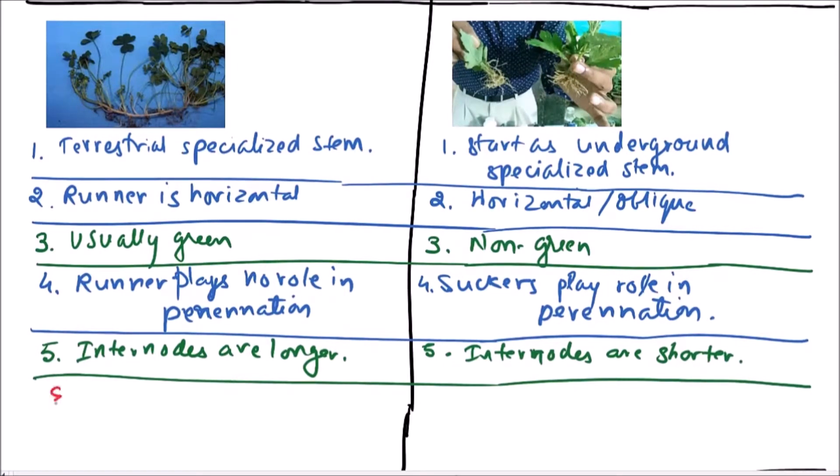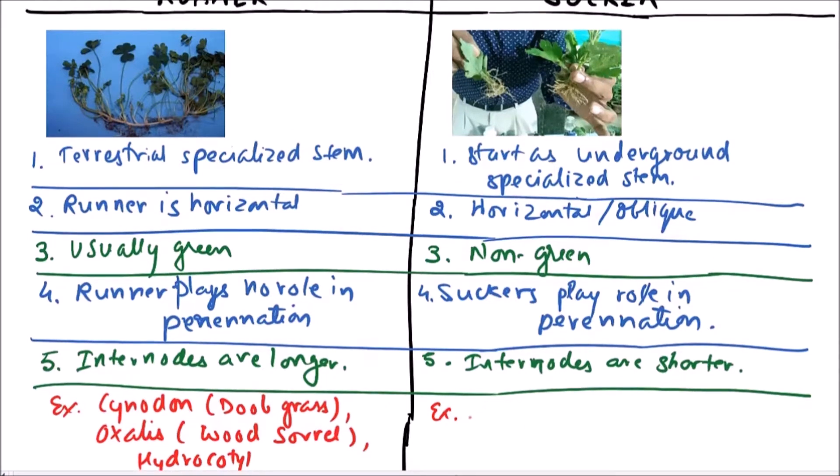First one is Cynodon, which is also known as dub grass, then Oxalis, which is also known as wood sorrel, another example is Hydrocotyle.